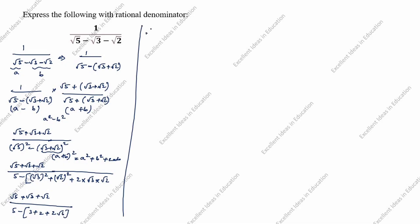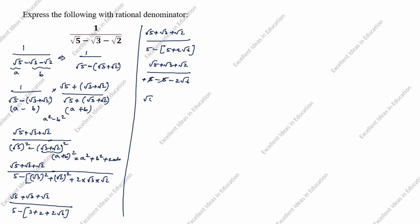So we have root 5 plus root 3 plus root 2, divided by 5 minus (3 plus 2 plus 2 root 6), which gives 5 minus 5 minus 2 root 6. The 5 minus 5 cancels, leaving root 5 plus root 3 plus root 2, divided by minus 2 root 6. The denominator root 6 is an irrational number, so we need to rationalize again.